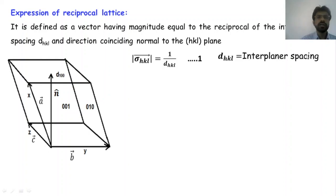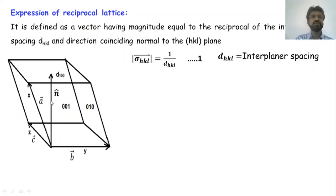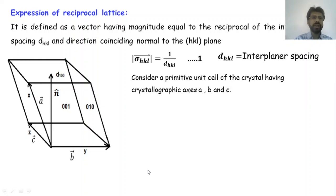Now we are going to obtain the relation between the reciprocal lattice and the direct lattice. The reciprocal lattice is defined as the vector having magnitude equal to the reciprocal of the interplanar spacing and direction coinciding with the normal to the hkl plane. The direction of the reciprocal lattice vector is along the direction of the normal. So we write: |σ_hkl| = 1/d_hkl.